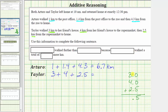In the ones place value, we have three plus four plus two, which is nine. Taylor walked a total of 9.5 kilometers. We now know that Taylor walked further than Arturo. So for the sentence, we can write in Taylor, because Taylor walked a total of blank more kilometers.